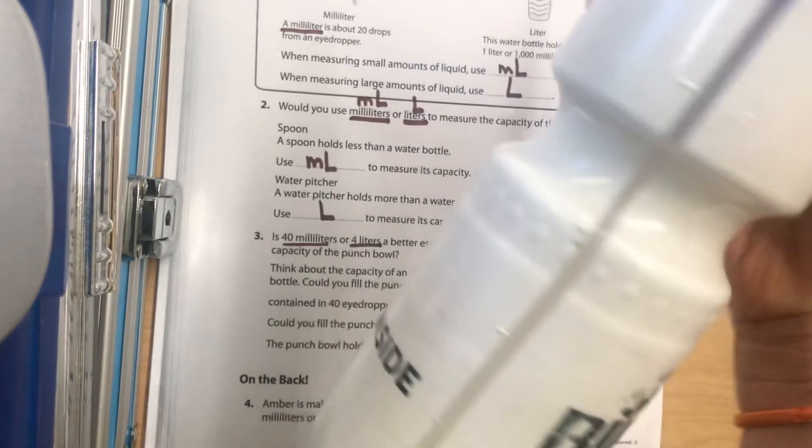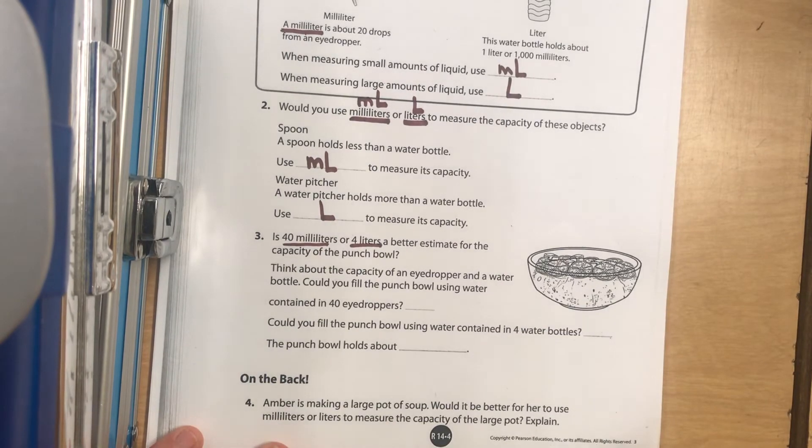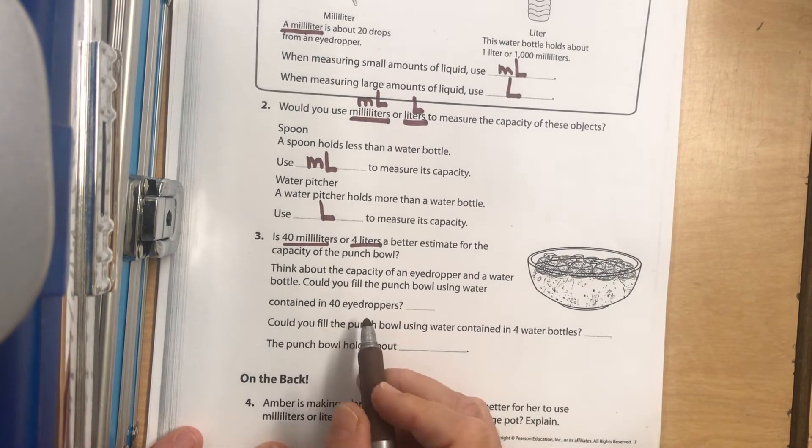Or 40 eyedroppers. So could you fill a punch bowl using 40 eyedroppers? No. It would be just barely full at the bottom.